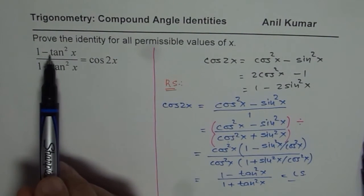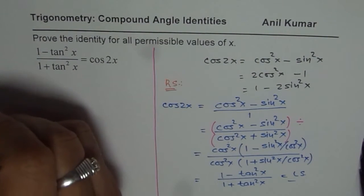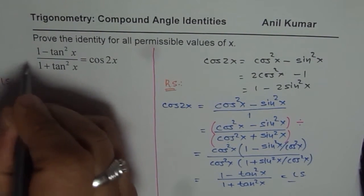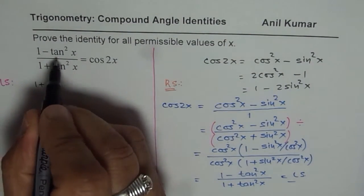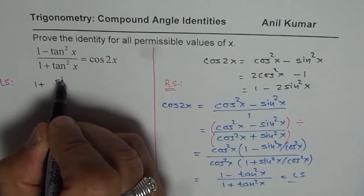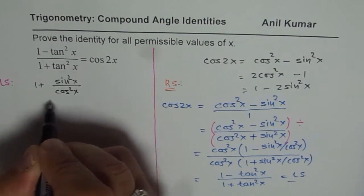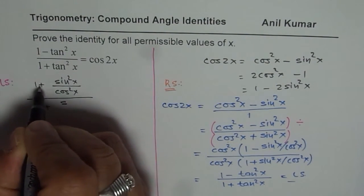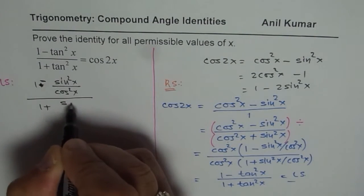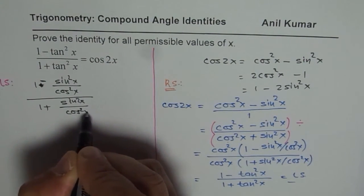Now let us see how to do this question. So we could actually begin from the left side and then solve it. So let us write down the left side as 1 plus, instead of tan, I am writing this as sin square x over cos square x. Divided by 1 plus, I mean, this was minus.